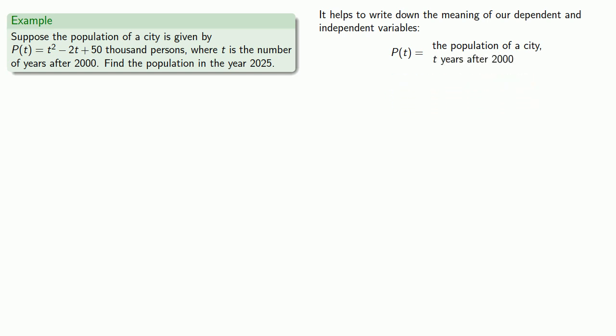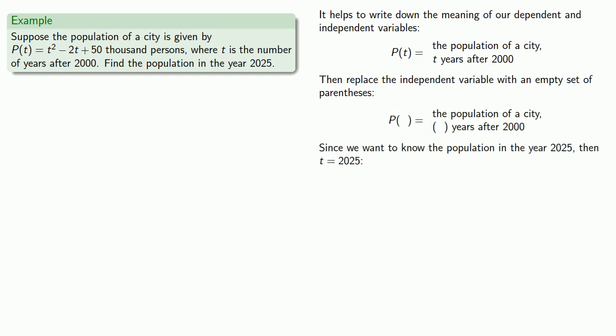And just like we did when we evaluated a function, we can replace the independent variable with an empty set of parentheses. So we want to find the population in the year 2025. So we'll let t equal 2025. And again, whatever goes in one set of parentheses should go in all of them. And this is what we want, the population of the city, 2,025 years after the year 2000. Eh, maybe not. That would tell us the population of the city in the year 4,025, which is not what we actually want.